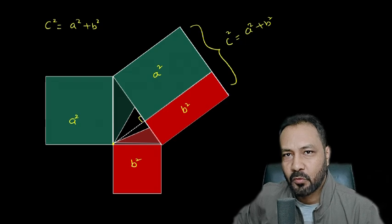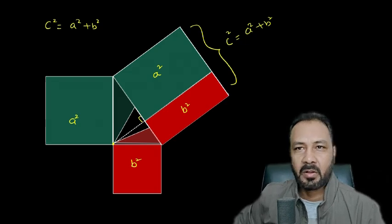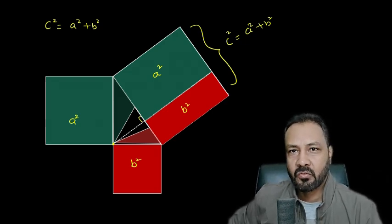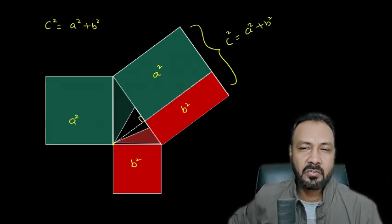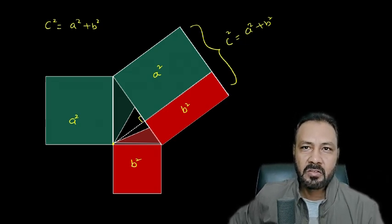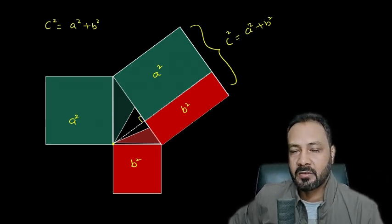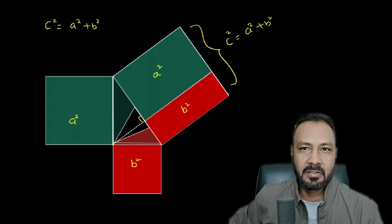Thus I have geometrically proved Pythagoras theorem: the square of the hypotenuse equals the sum of the squares of the other two sides in a right angle triangle. Thank you.